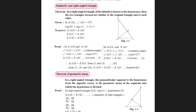For proof, consider triangle ADB and original triangle ABC. Angle DAB is congruent to angle BAC — that's a common angle. Both triangles also have a right angle: angle ABC and angle ADB are each 90 degrees. Therefore, the two triangles are similar by the AA test. So the first part of the theorem is proved.